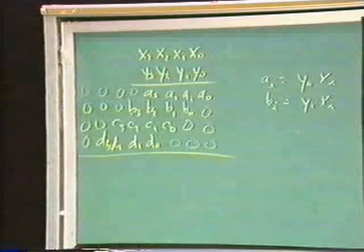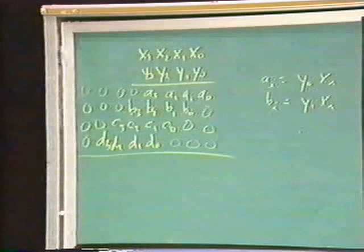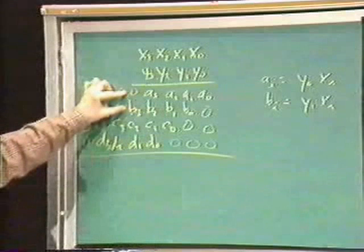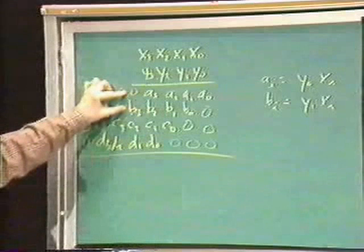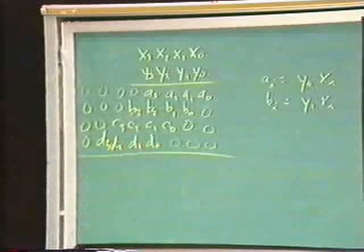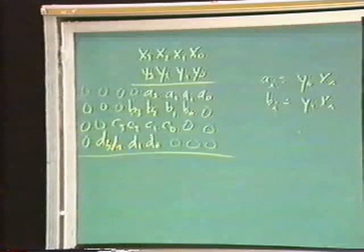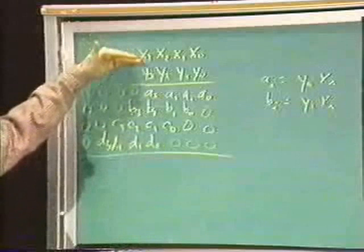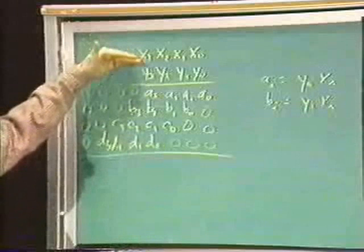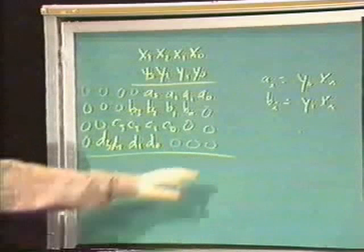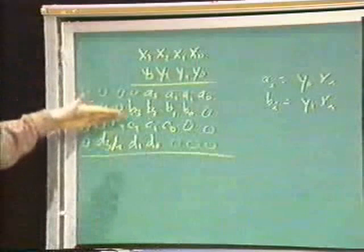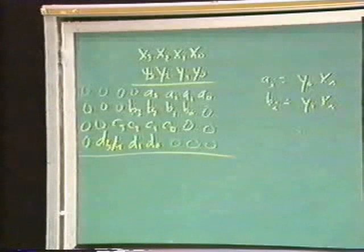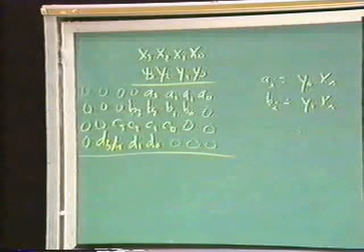The naive idea would say: since we know how to do parallel adds, do a parallel add of the first two partial products, then another parallel add of the next two, then a final parallel add of those results. For 2N-bit inputs, you'd have N partial products. In one level of AND gates you compute all partial products simultaneously. Then with log N levels of pairwise parallel additions, and each parallel addition taking log N time itself, you get log-squared N depth overall.